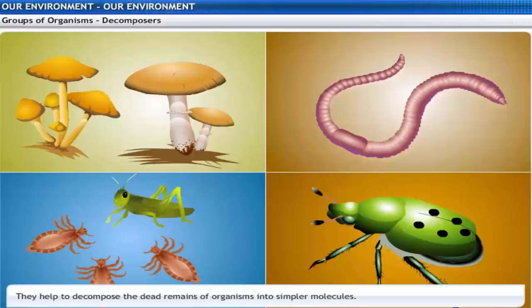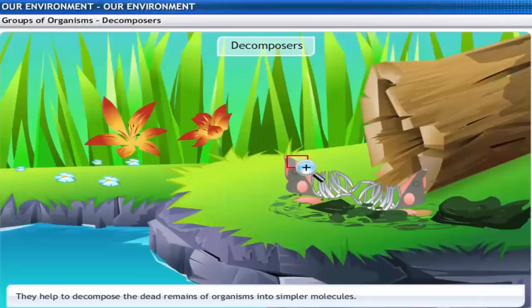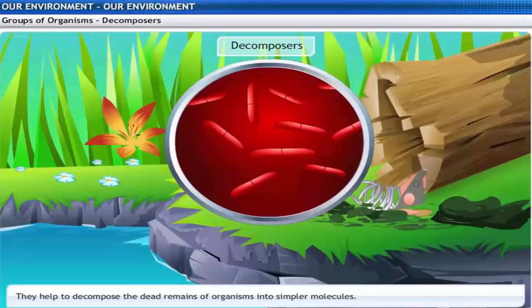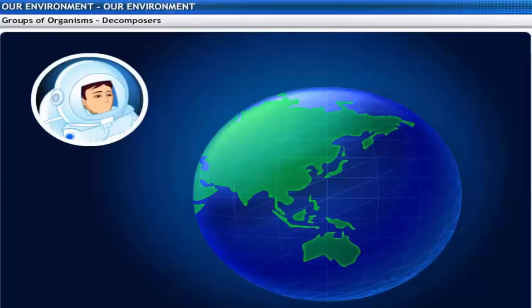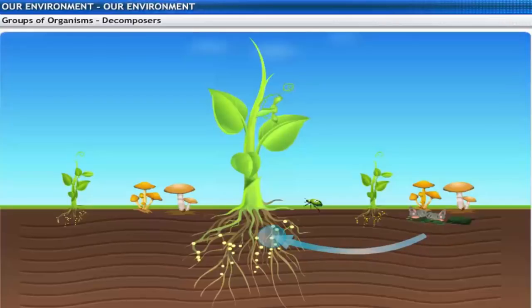Decomposers help to decompose the dead remains of organisms. In the process, complex molecules are broken down into simpler molecules. If they decompose the dead remains, how does it help the ecosystem? The decomposed material is used up by other organisms, primarily plants, as nutrients for their sustenance.